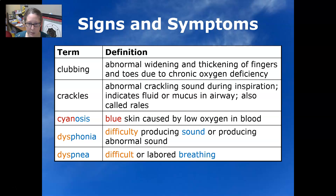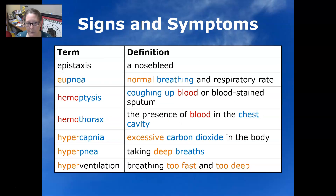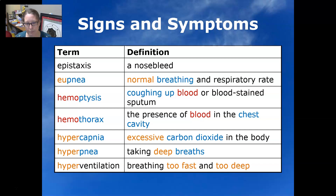Cyanosis is blue skin caused by low oxygen in the blood. Dysphonia is difficulty producing sound or producing abnormal sound. Dyspnea is difficult or labored breathing. Epistaxis is a nosebleed. Eupnea is a normal breathing pattern and respiratory rate. Hemoptysis is coughed-up blood or blood-stained sputum.